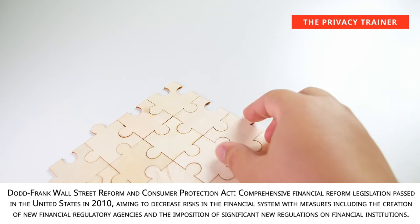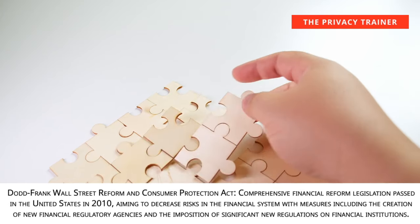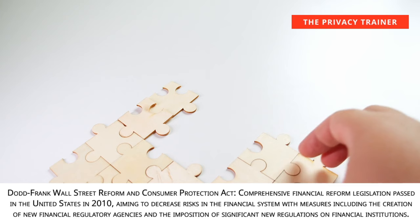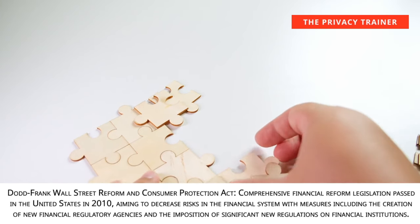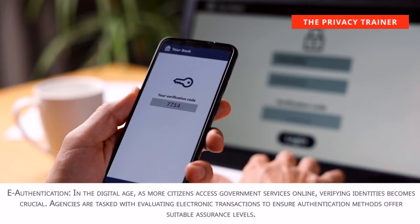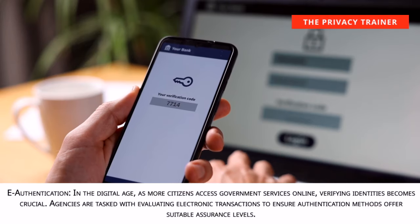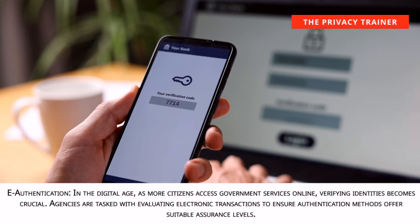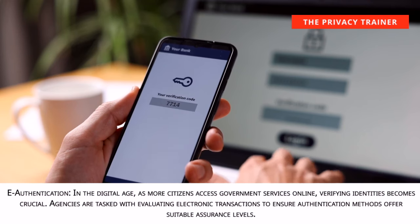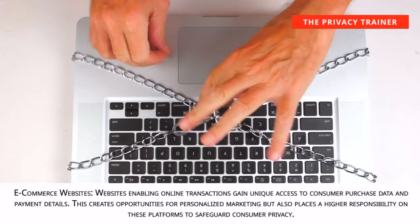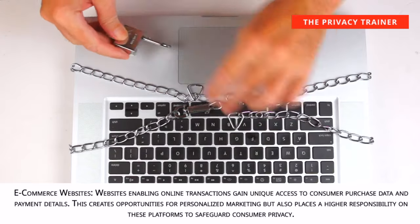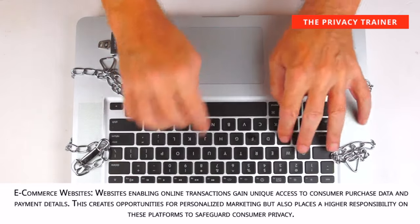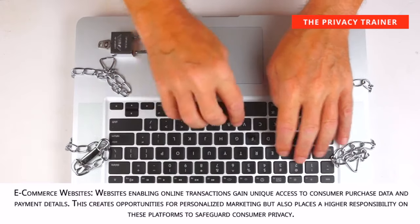Dodd-Frank Wall Street Reform and Consumer Protection Act. Comprehensive financial reform legislation passed in the United States in 2010, aiming to decrease risks in the financial system, including the creation of new financial regulatory agencies and the imposition of significant new regulations on financial institutions. E-authentication. In the digital age, as more citizens access government services online, verifying identities becomes crucial. Agencies are tasked with evaluating electronic transactions to ensure authentication methods offer suitable assurance levels. E-commerce websites. Websites enabling online transactions gain unique access to consumer purchase data and payment details, creating opportunities for personalized marketing but also placing higher responsibility on platforms to safeguard consumer privacy.